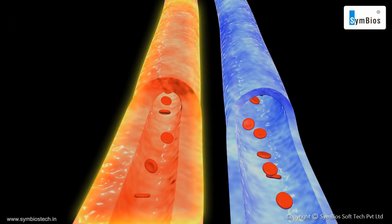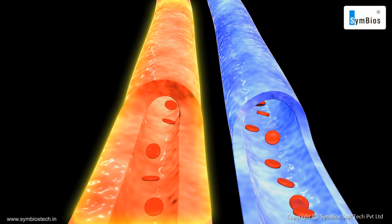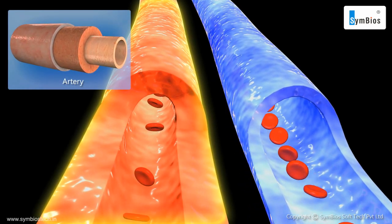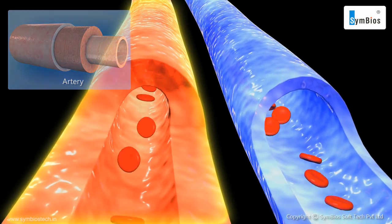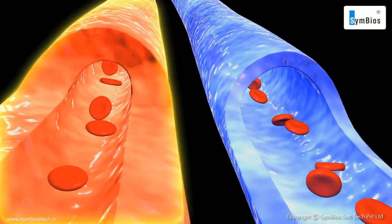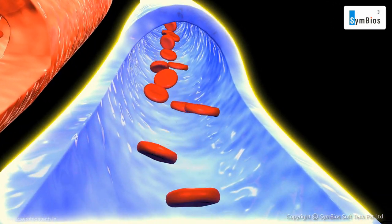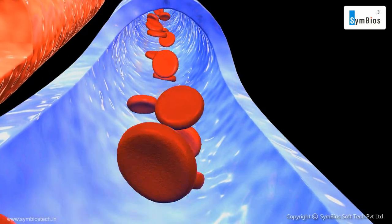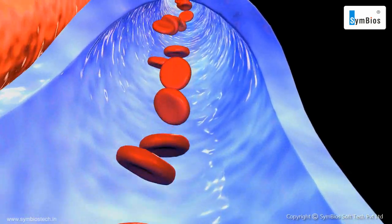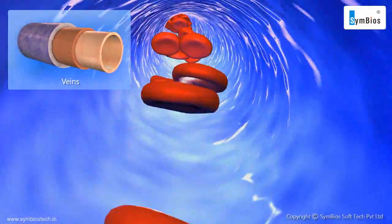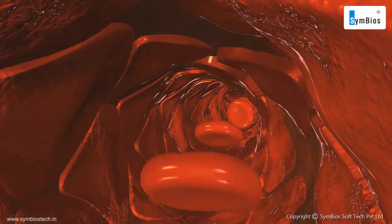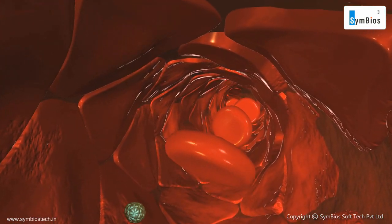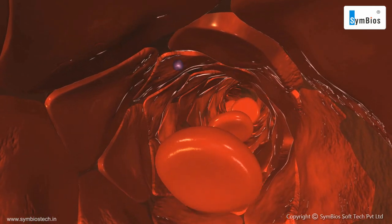When the heart pumps out blood, it is under high pressure. Therefore, the arteries which carry blood away from the heart are equipped with thick and elastic walls to sustain this pressure. Veins collect blood from different organs and bring it back to the heart, so the blood they carry is not under pressure; therefore, veins have thin walls. The wall of capillaries is one cell thick and porous, which enables materials to pass through it.